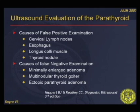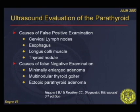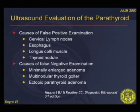As mentioned, there are many reasons for false positive examinations when evaluating the parathyroid gland. The most common cause is the esophagus. Cervical lymph nodes, longus coli muscle, or thyroid nodules can also be mistaken for the gland. False negative results are usually secondary to minimally enlarged adenoma, multinodular thyroid goiter, or ectopic location of the parathyroid adenoma.